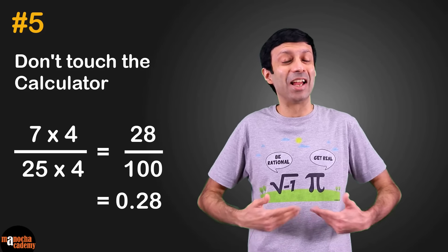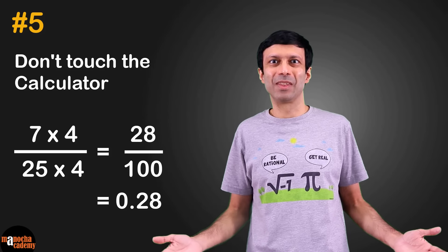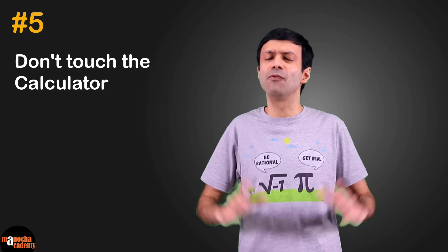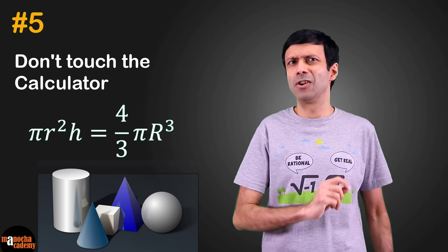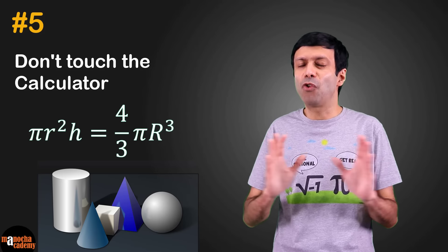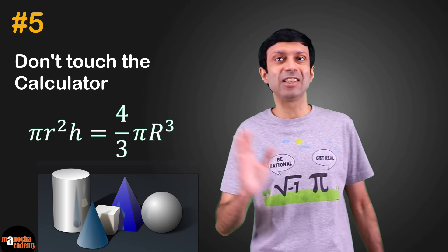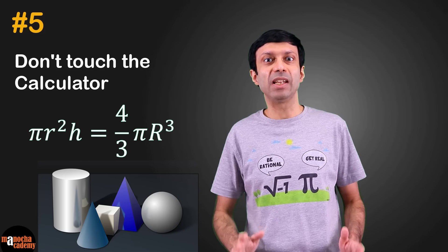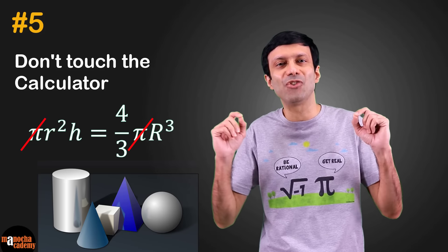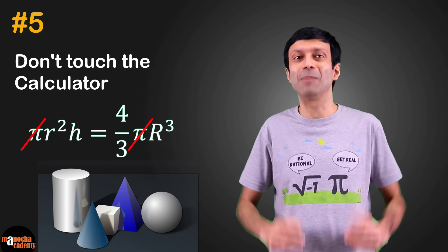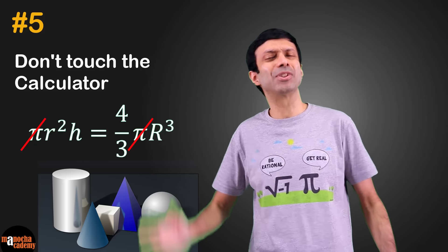When solving surface area and volume sums, don't substitute the value of pi directly, don't be in a hurry. First form your equation, take things common, sometimes you'll see the value of pi gets cancelled on both sides. So use calculation tricks like this and solve your sums two or three times faster.